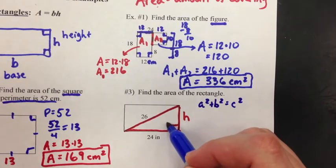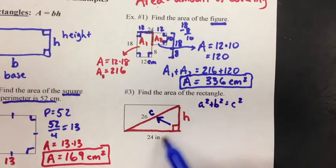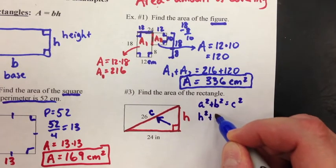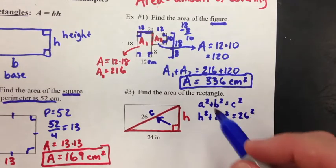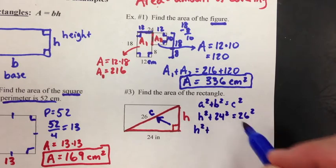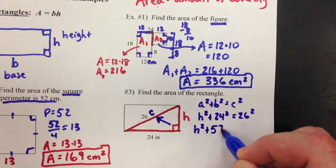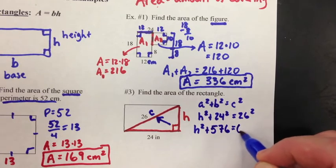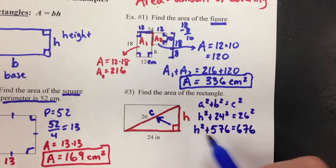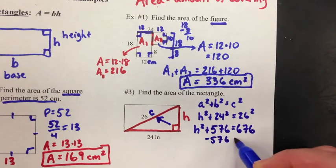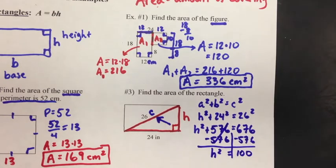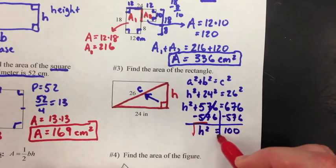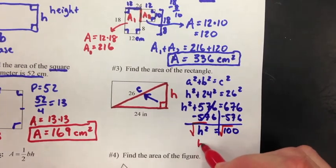In this case, the c is the hypotenuse, which would be the 26. So when we set this up, I'm going to say h squared plus 24 squared equals 26 squared. So we get h squared plus 576 equals 676. Let's subtract the 576 from both sides. So we get h squared equals 100. Now to solve that, we need to take the square root of both sides. We get h equals 10.